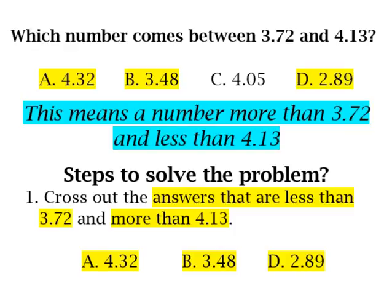So looking at our answer choices, we have A, 4.32. That is more than 3.72, however it's also more than 4.13, so we know that we can cross that answer out. B, 3.48, well that's less than 3.72 and we need it to be more than 3.72, so we can cross answer choice B out.